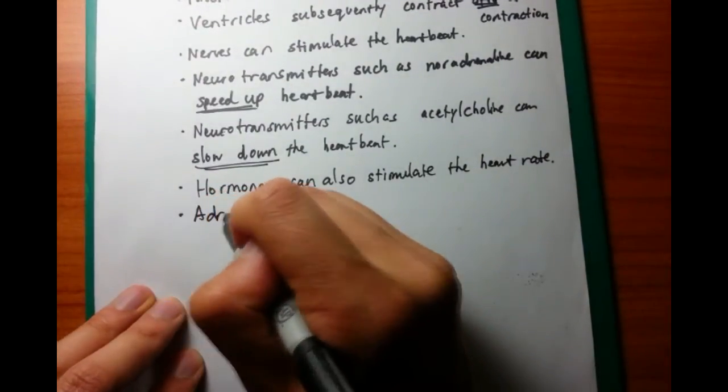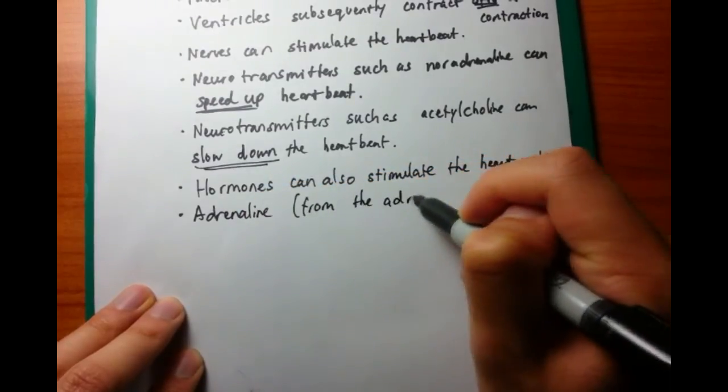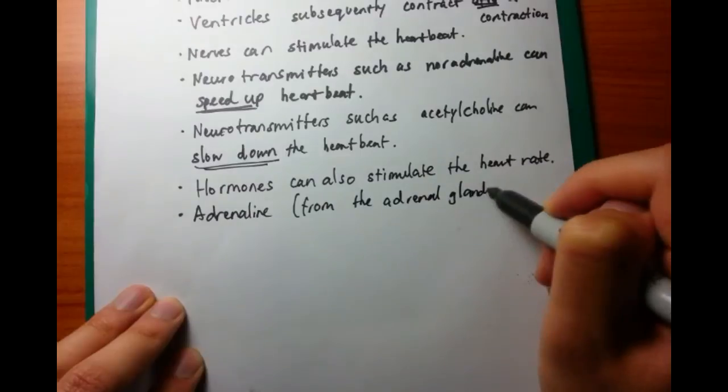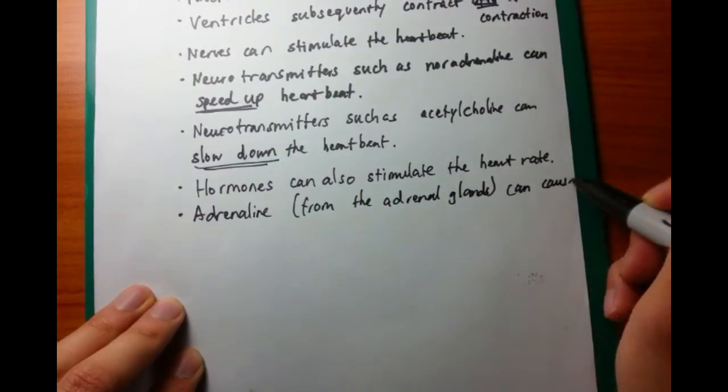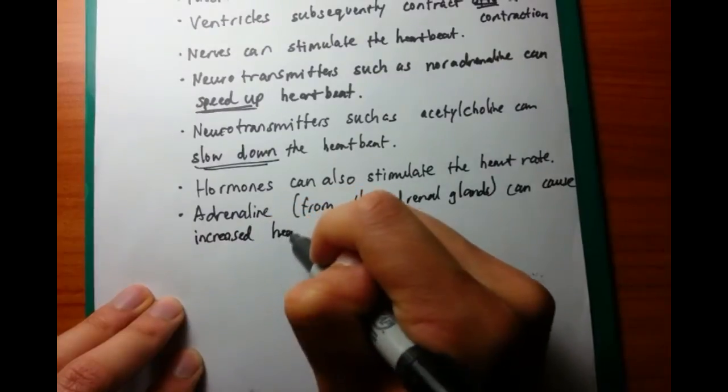We talked about noradrenaline before, which is a neurotransmitter. Well, adrenaline is a hormone. It's released from the adrenal glands and causes an increased heart rate. Think of fight or flight response, sympathetic nervous system, increasing the heart rate.